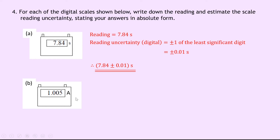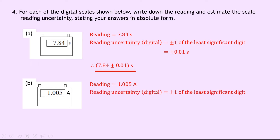Part b is an ammeter showing 1.005 amps, so the reading is 1.005 amps. The reading uncertainty in that digital scale is equal to plus or minus one of the least significant digit — when this takes a value of one — so the uncertainty is plus or minus 0.001 amps. Writing this in absolute form: 1.005 ± 0.001 A. Note that the uncertainty is stated to one significant figure.